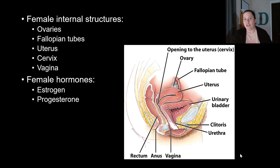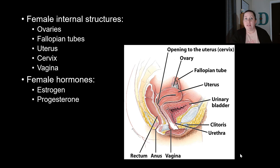The uterus is a pear-shaped organ that sits on top of the bladder. This is where, if fertilization occurs and the egg implants, the fetus and baby will develop. We then have the cervix, which is the neck region connecting the uterus to the vagina. The vagina is the opening out toward the outside. The female hormones produced by the ovaries are estrogen and progesterone.